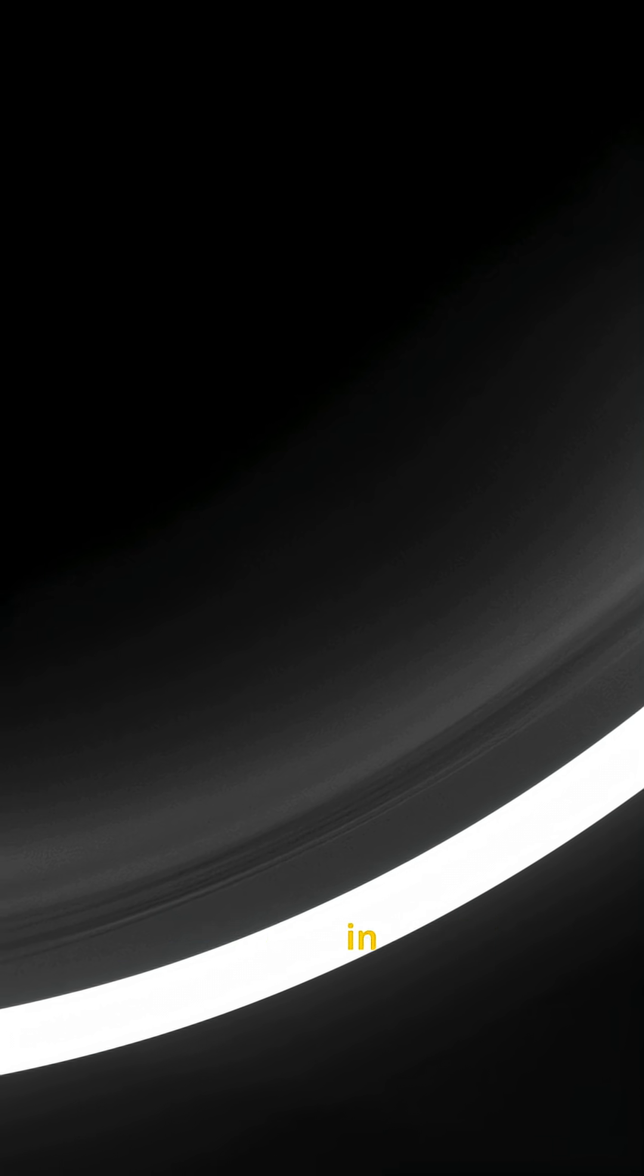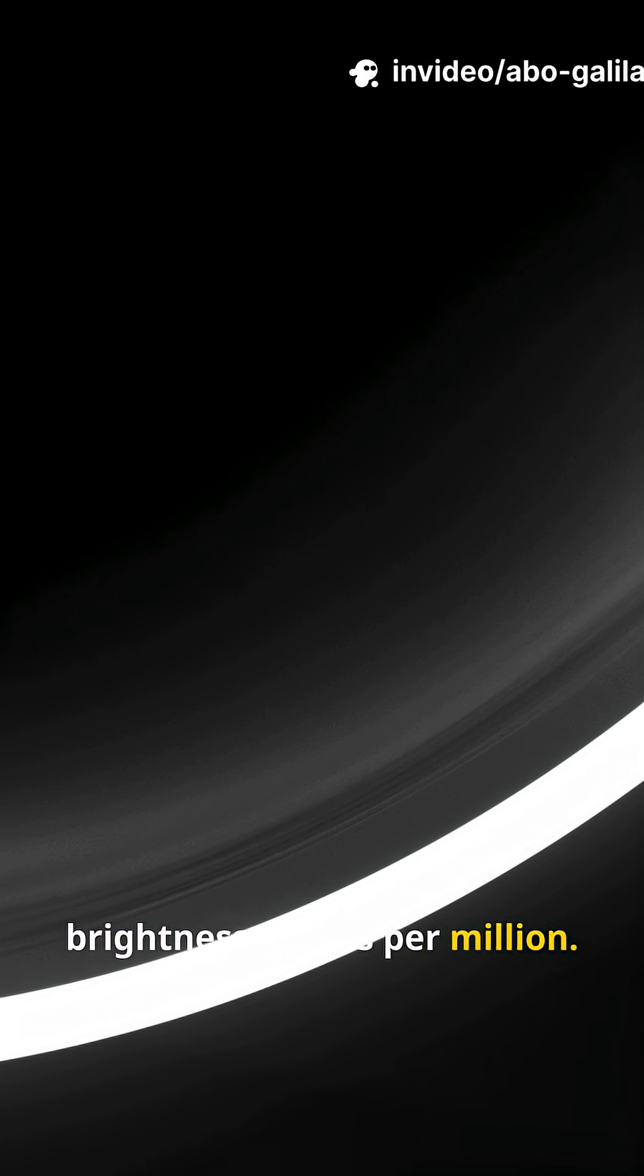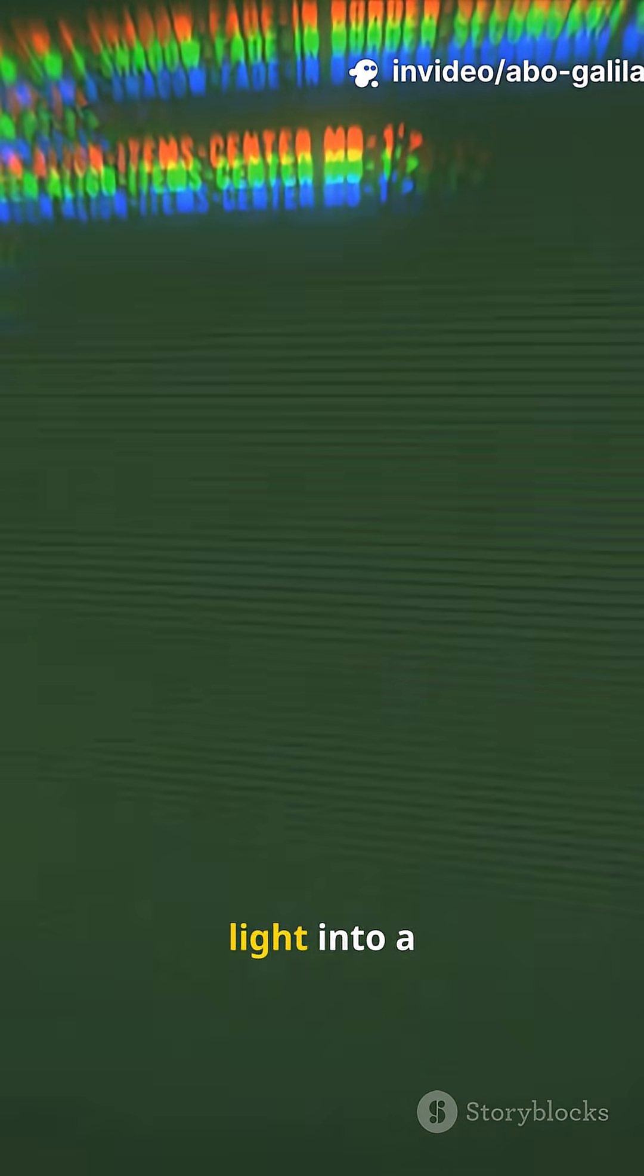Webb measures tiny dips in brightness, parts per million. Then it spreads the light into a spectrum to find molecular fingerprints.